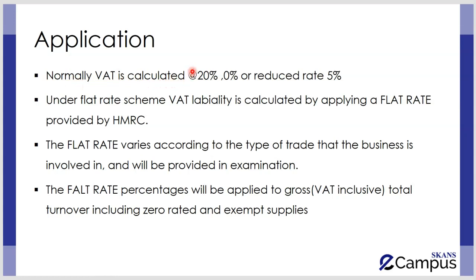Normally VAT is computed either at the standard rate of 20%, at 0% when supplies are zero-rated, or at a reduced rate for reduced-rated supplies. Once a business joins the Flat Rate Scheme, VAT liability is calculated in a very simple way by applying a flat percentage over all its supplies. That flat rate is provided by HMRC and will vary according to the type of trade the business is involved in — it will be provided in exams.